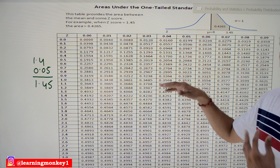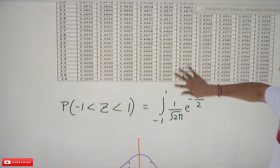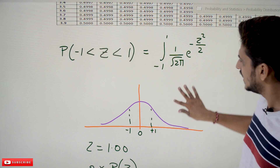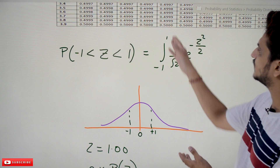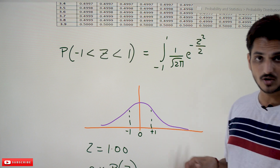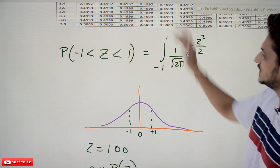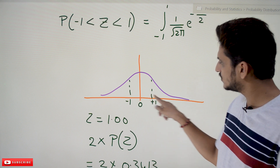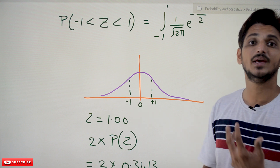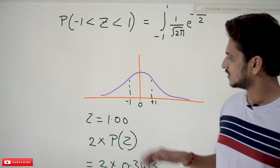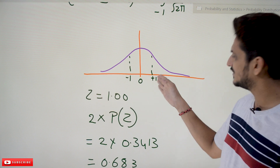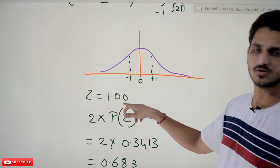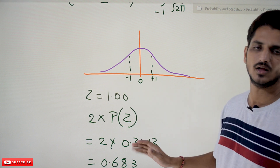Now we will do some examples. For the probability of -1 < z < 1: graphical intuition helps here — we need to identify the area from -1 to 1. Instead of using the integral formula (1/√(2π) × e^(-z²/2)), we use the table. Since the distribution is symmetric, the area from 0 to 1 equals the area from 0 to -1. So the probability equals 2 times the probability at z = 1.00.